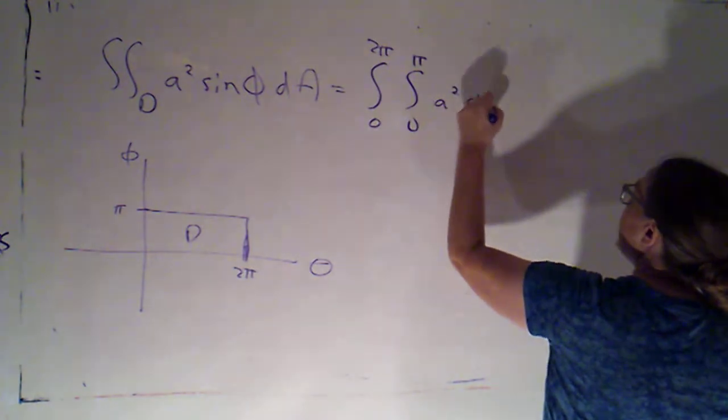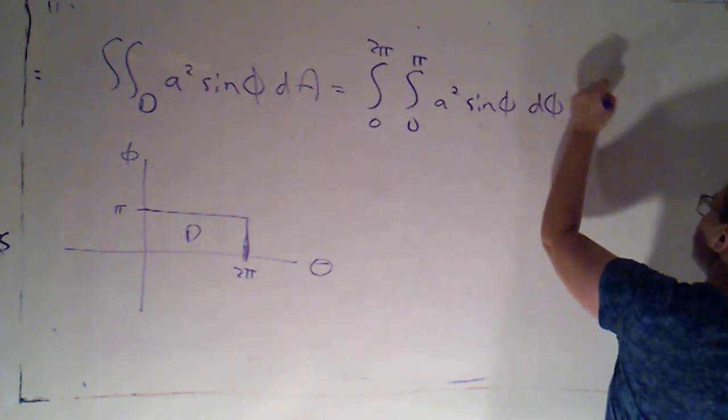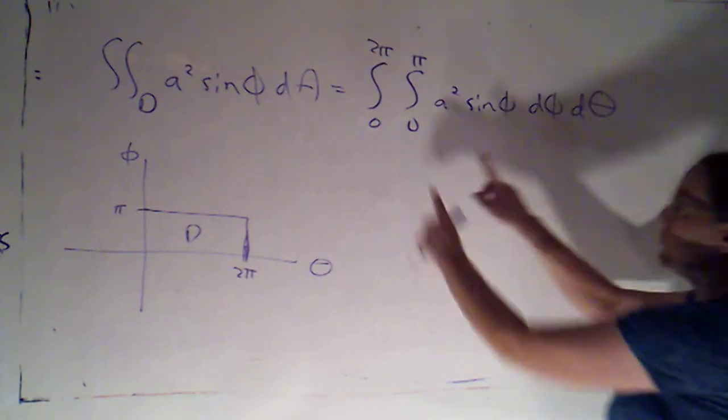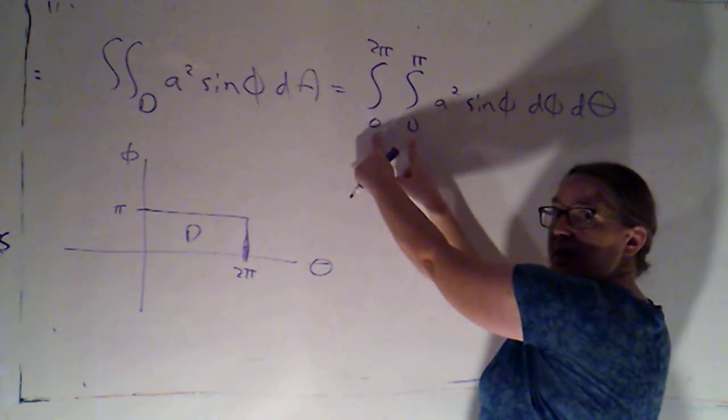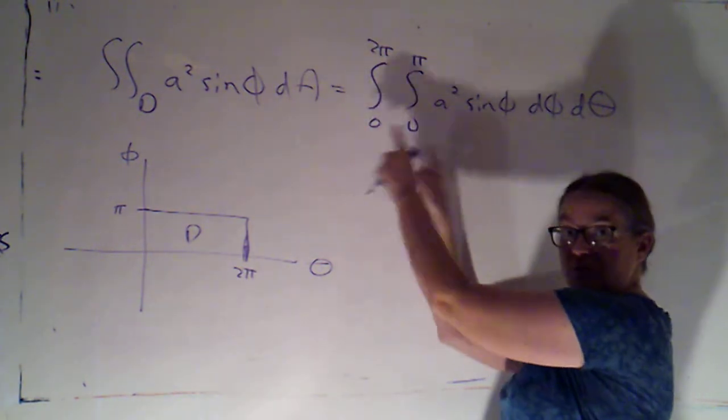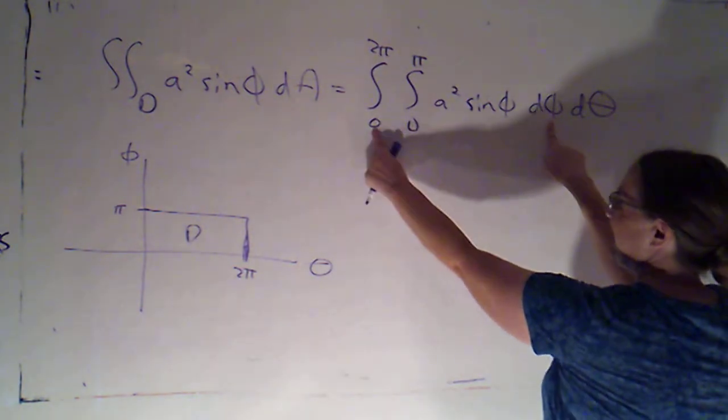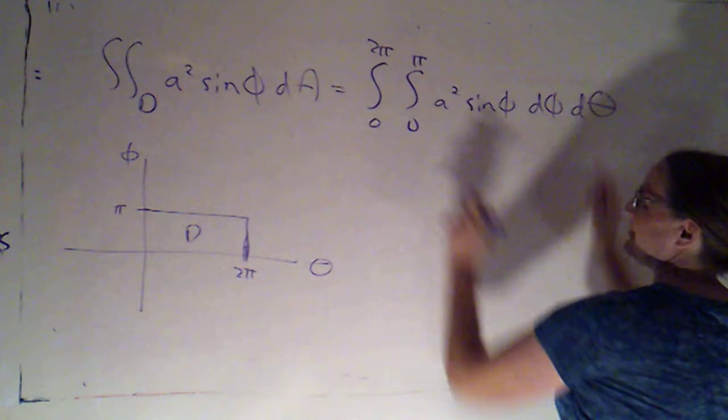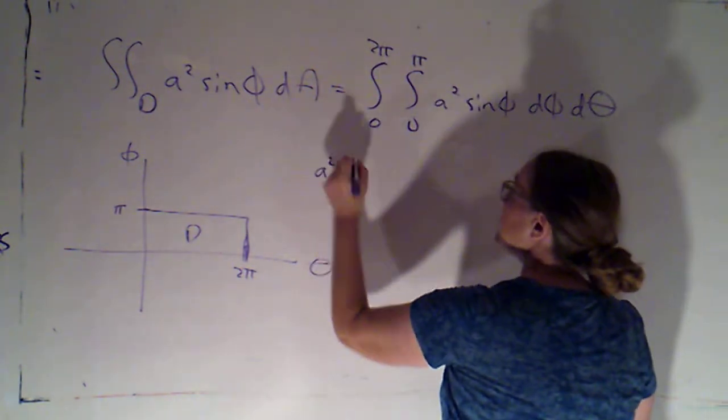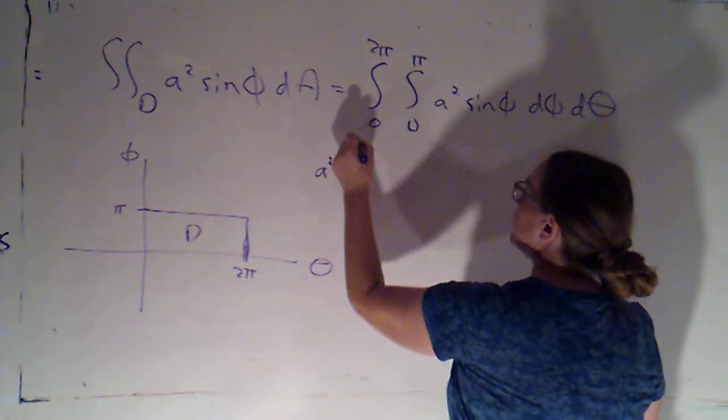A squared sine phi d phi d theta. And of course, since these are constant limits of integration, doesn't make any difference which one I do first, as long as these go with my d phi and these limits go with my d theta. Okay, the a squared is constant, so I'm going to just factor that out.